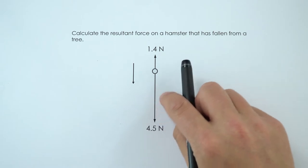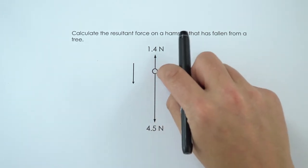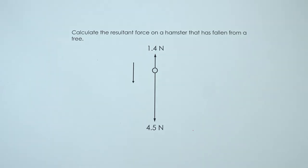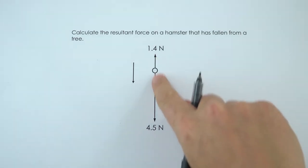This mass causes there to be a weight downwards of 4.5 Newtons, and at this point there's a drag force at this particular instant of 1.4 Newtons upwards. We want to know the resultant force.